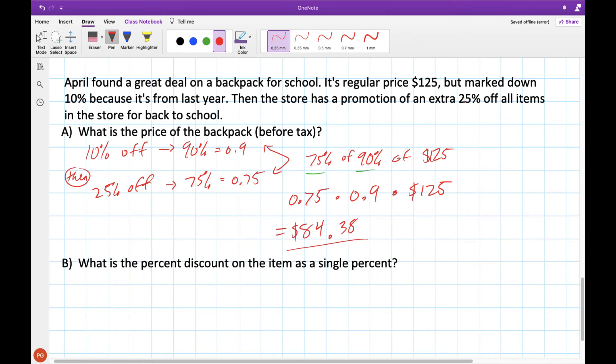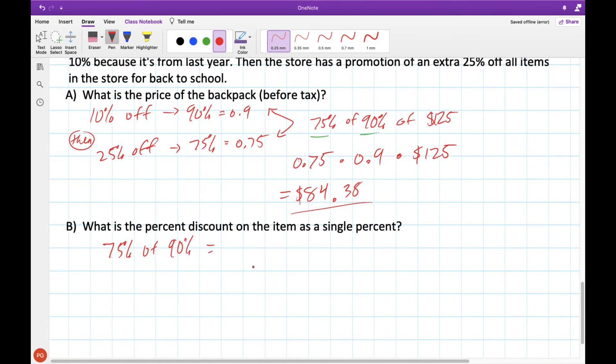Now we might be wondering, what's the actual percent discount? If it's not 10% plus 25%, what's the overall discount if we take off 10% then another 25%? In this case, again, we're doing 75% of 90%. And this would tell us what percentage of the original product that we're actually paying for. So this would be 0.75 times 0.9. We would get an answer of 0.675, which is the same as 67.5%. So what that tells us is that that is the fraction or the percentage of the original price that we are actually paying.